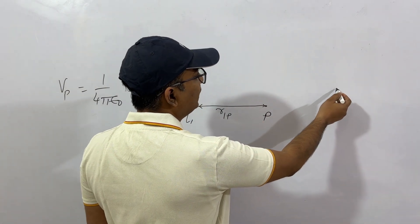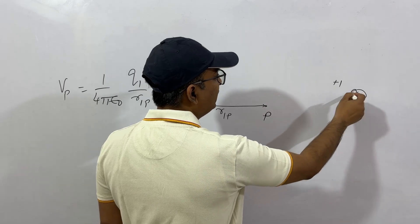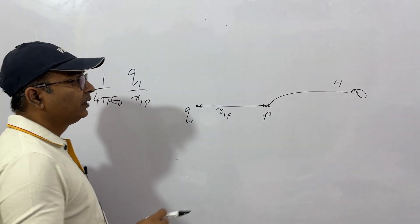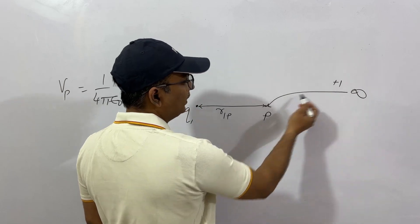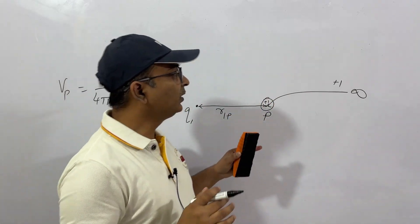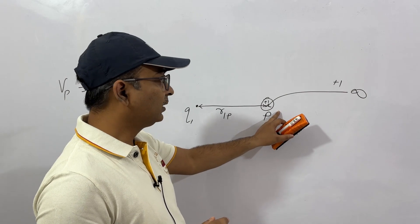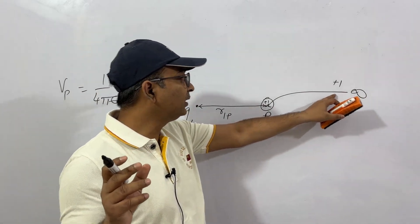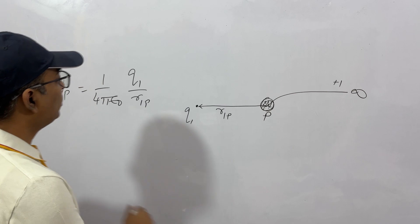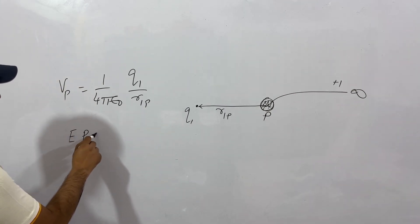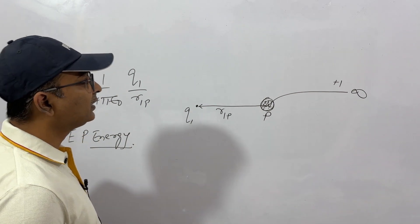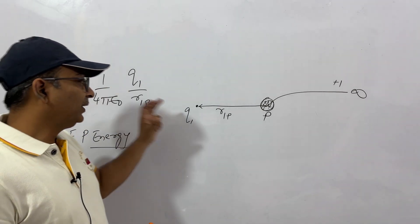We have discussed the definition of potential: the work done in bringing a unit positive charge from infinity to this point is the electric potential. Now think — we have done some work in bringing this particular charge from infinity to this point. Now this charge is placed at this point — where will this energy go? The work done in bringing it from here to here, the capacity of doing work is energy.